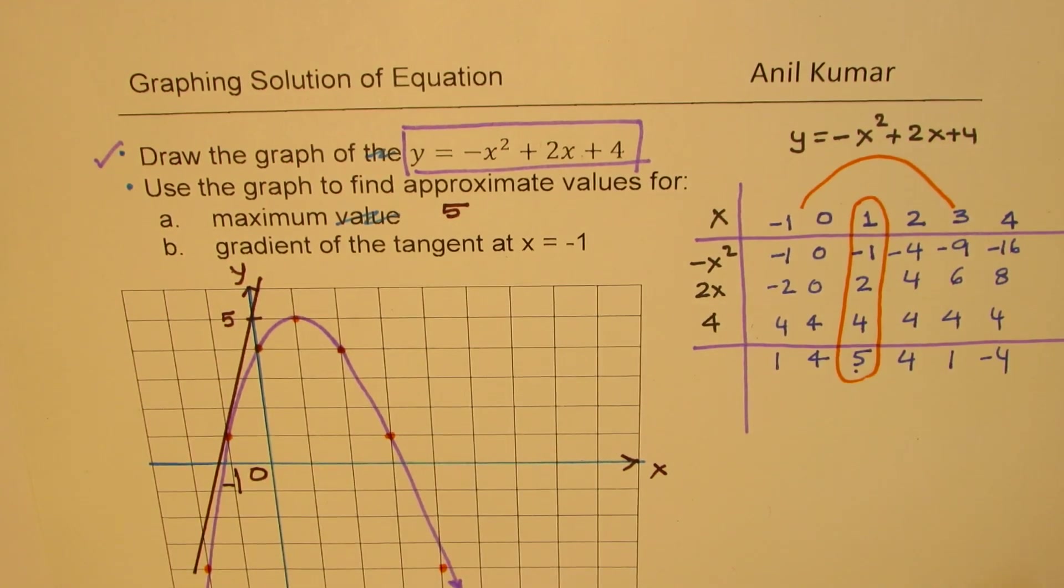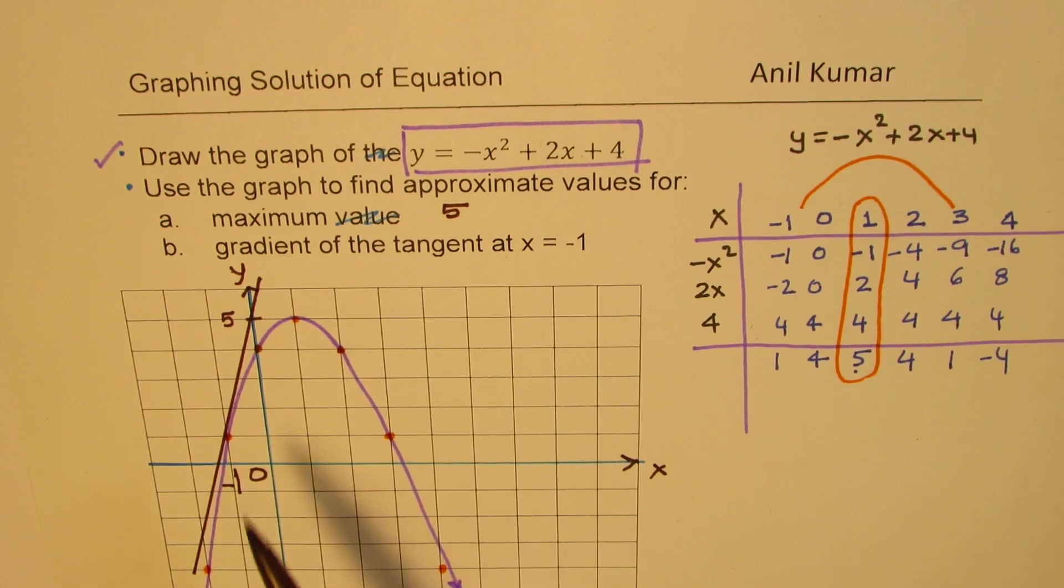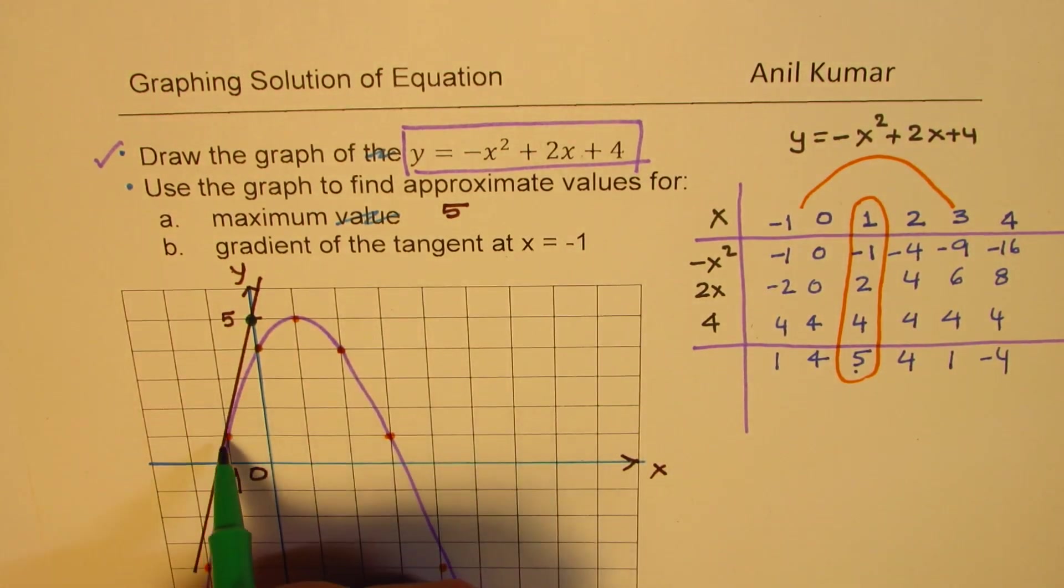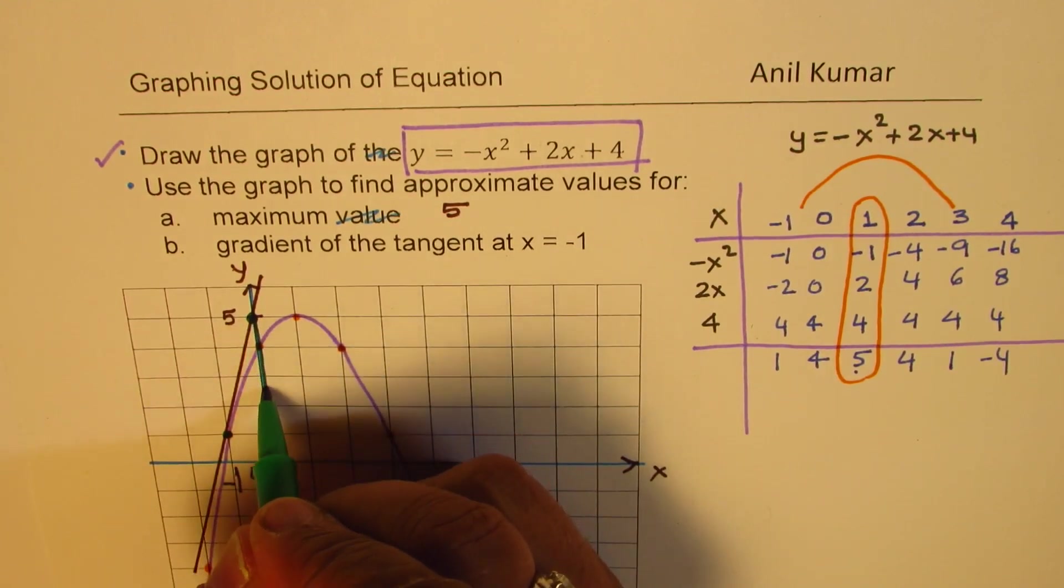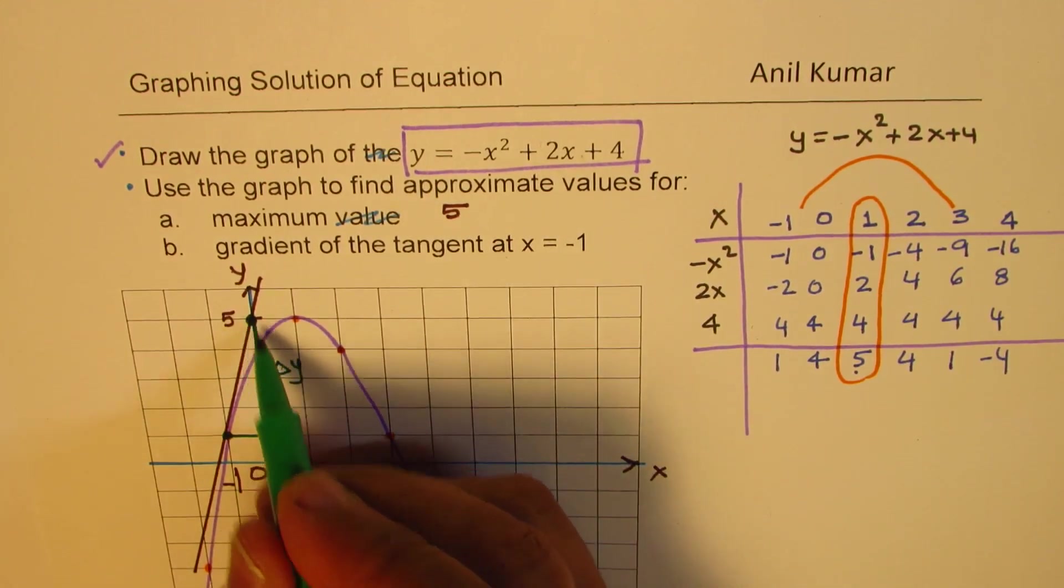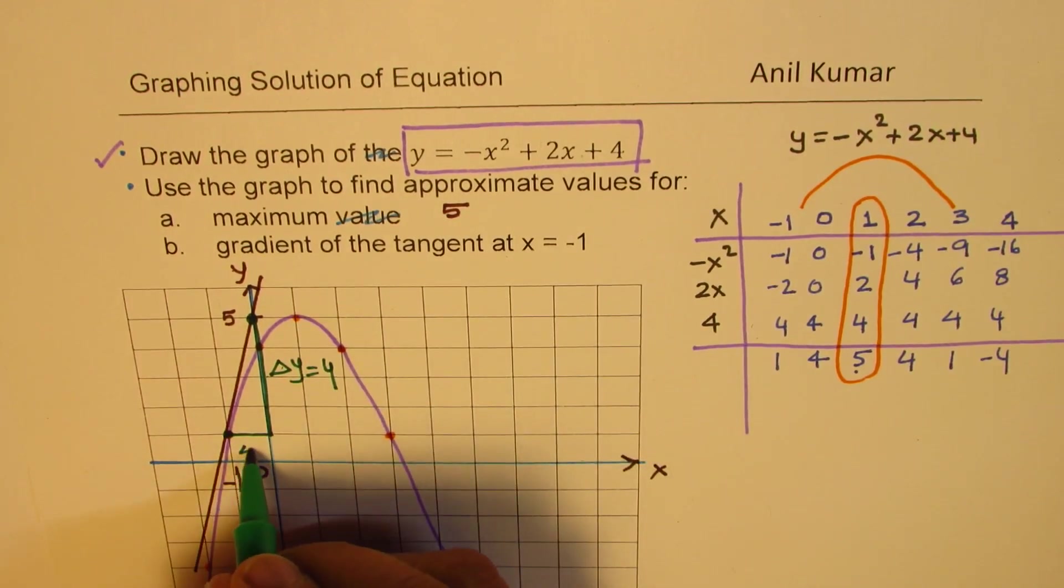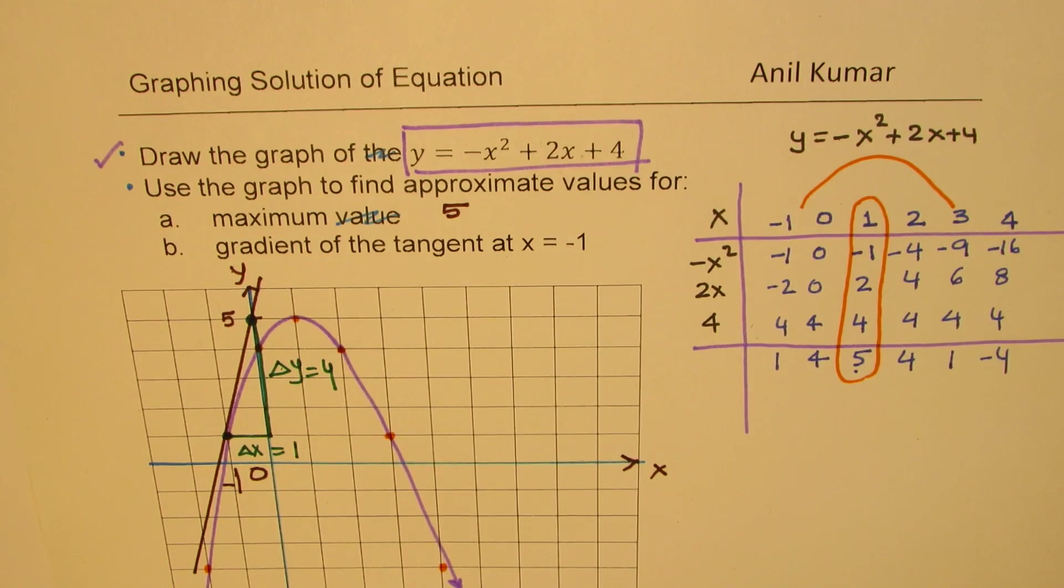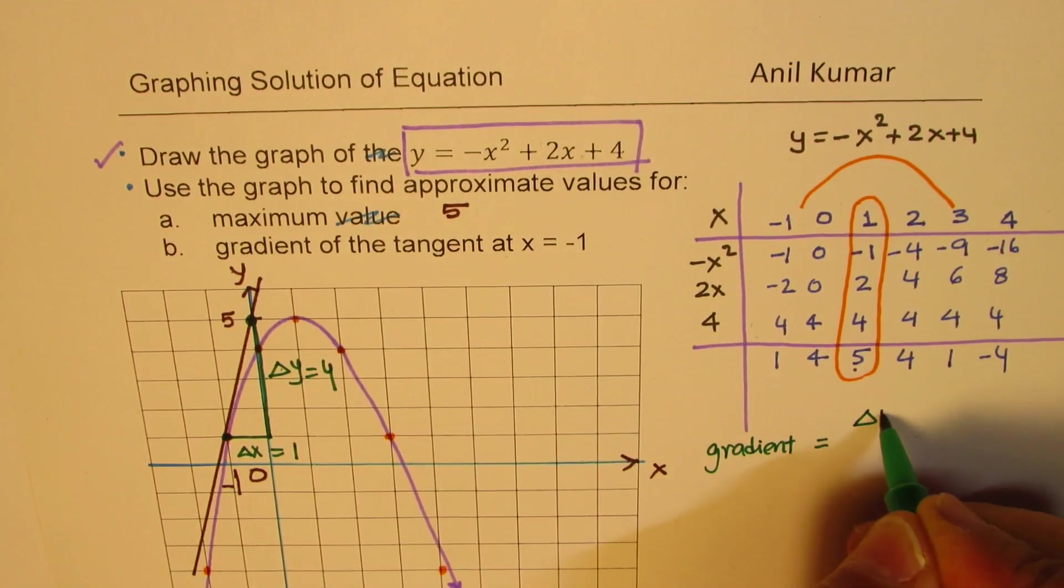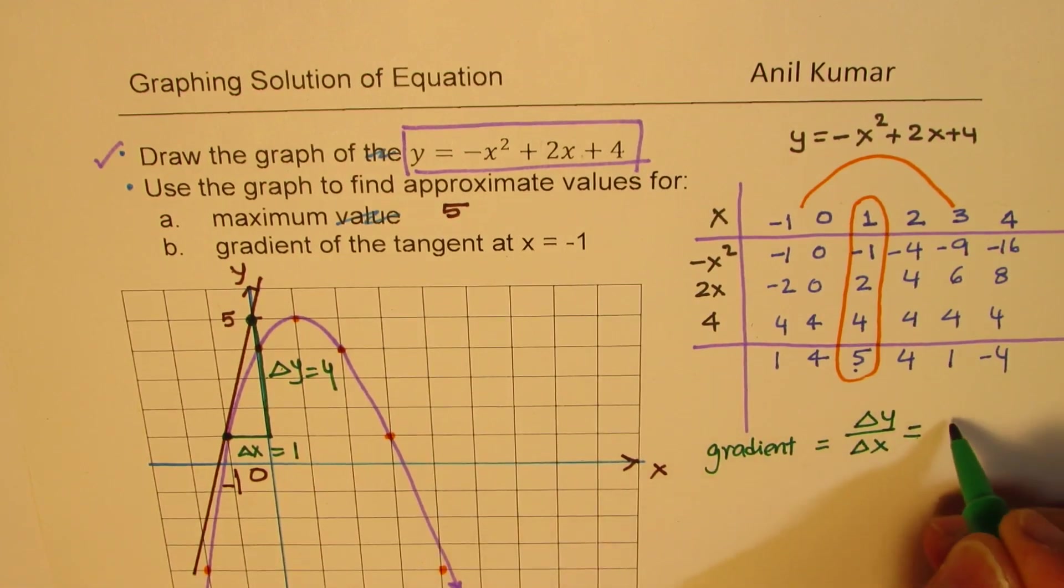Now, we need to find the slope of this particular tangent. The slope, we can now calculate with rise and run. One of the good points which this tangent has passed through is definitely here, and then we have this point itself. So we can find the slope as rise over run. At this stage, the change in y value is 1, 2, 3, 4, and change in x value is 1 unit. Of course, the slope is positive. We get the gradient as ratio of change in y over change in x. In this case, it is 4 over 1. So, the gradient is 4.